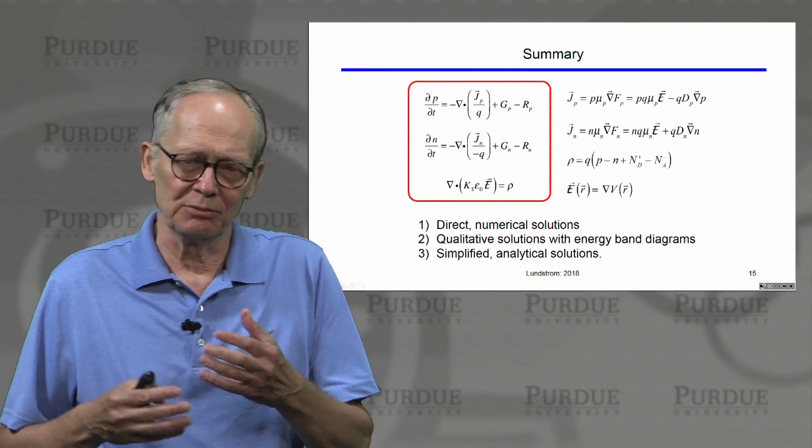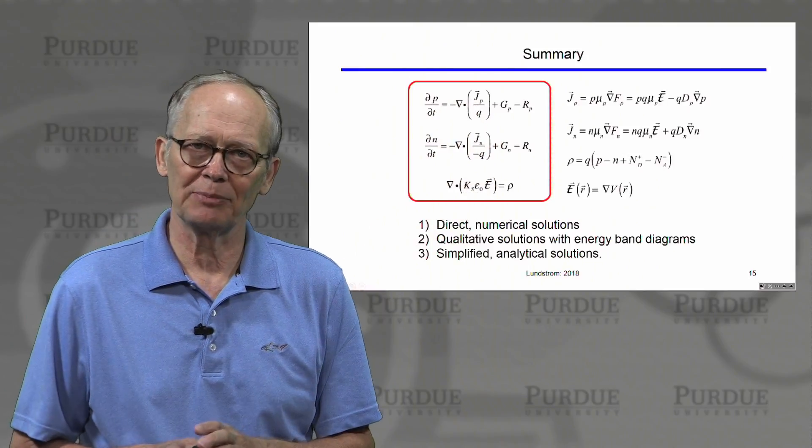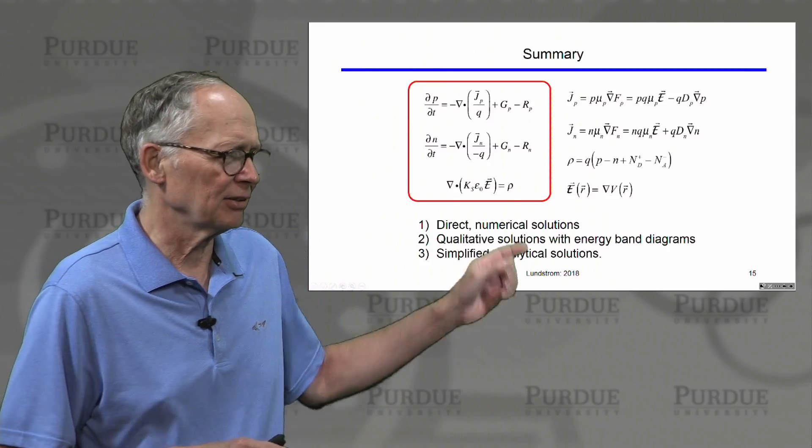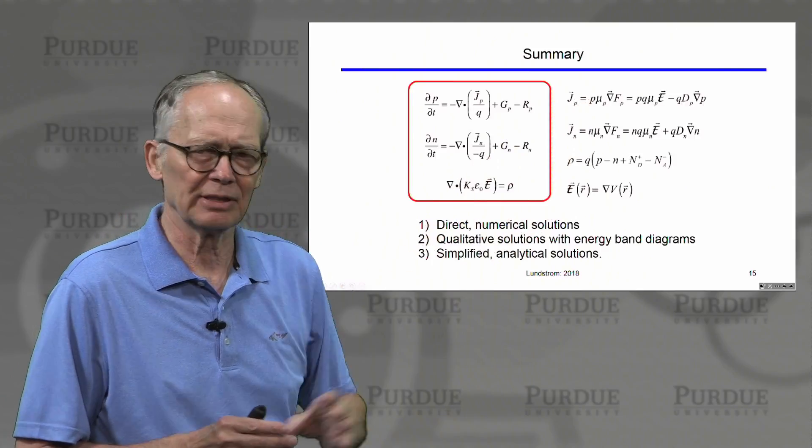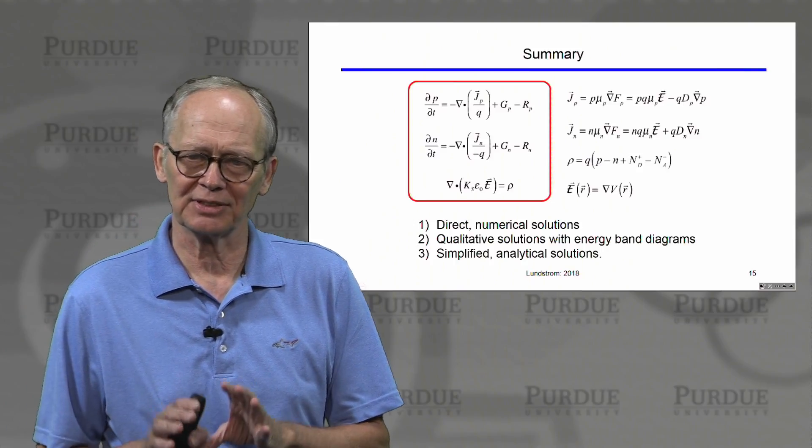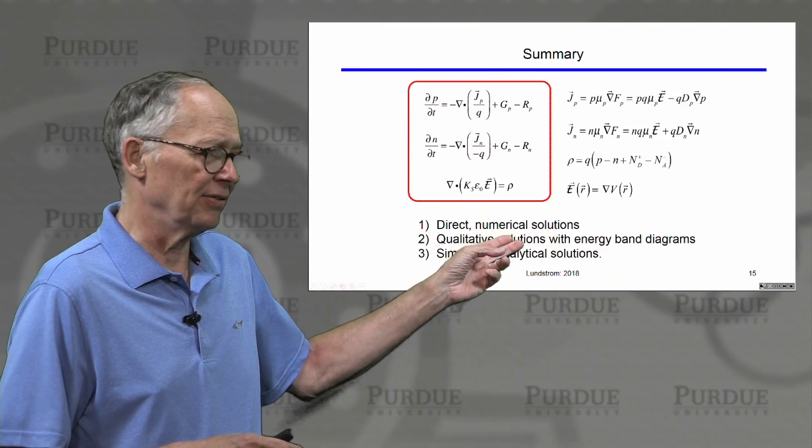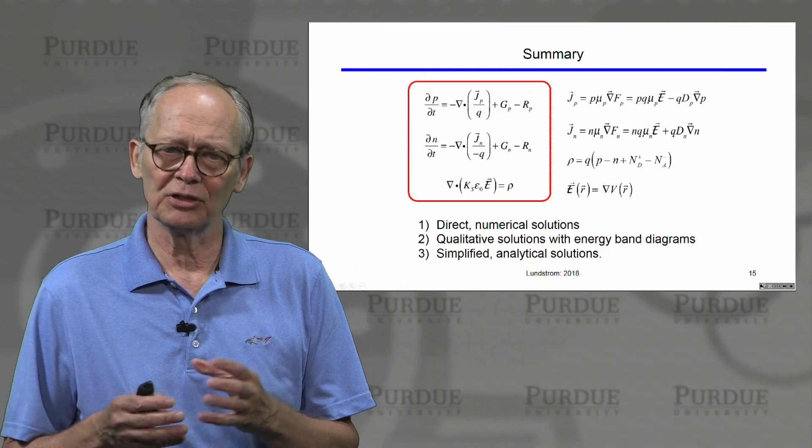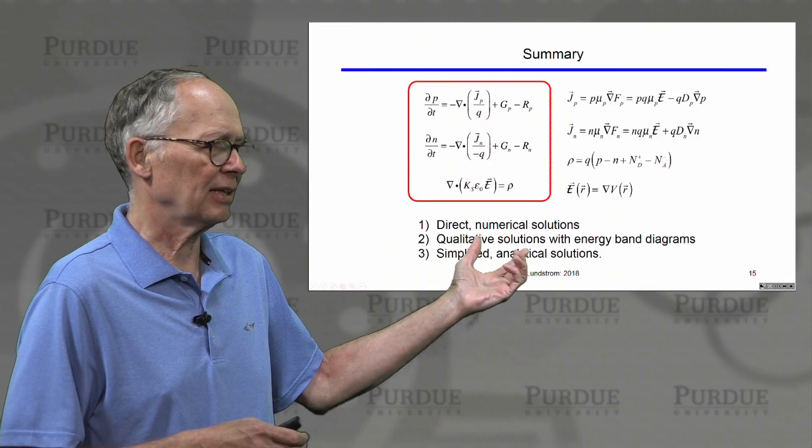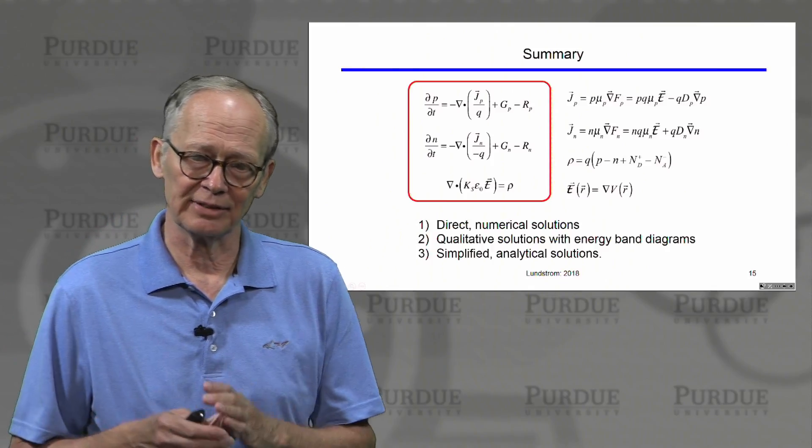To wrap up Unit 5 and the course, we have discussed the basic equations that describe the operation of a wide variety of semiconductor devices. They're not as fundamental as Maxwell's equations - there are some assumptions involved, especially in these current equations - but they're remarkably and broadly useful as a starting point for understanding semiconductor devices. These equations can be solved numerically on a computer. We discussed energy band diagrams for understanding qualitatively the solutions to these equations. And we've shown how under specific conditions we can simplify these equations greatly to analytically solve them.